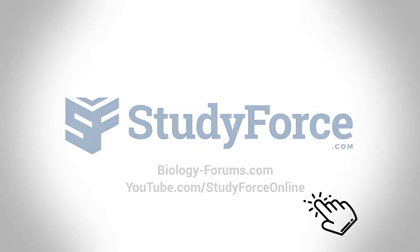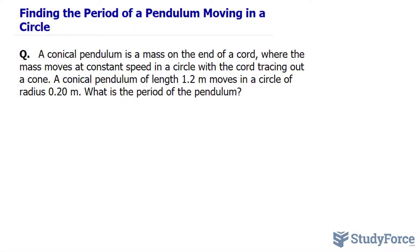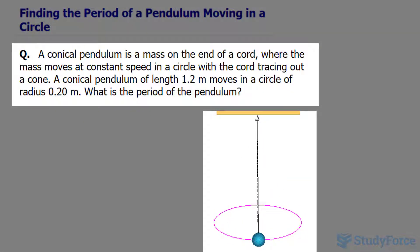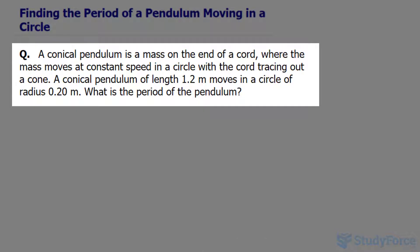In this lesson, I'll show you how to find the period of a pendulum moving in a circle. The question reads: a conical pendulum is a mass on the end of a cord where the mass moves at constant speed in a circle with the cord tracing out a cone. A conical pendulum of length 1.2 meters moves in a circle of radius 0.20 meters. What is the period of the pendulum?